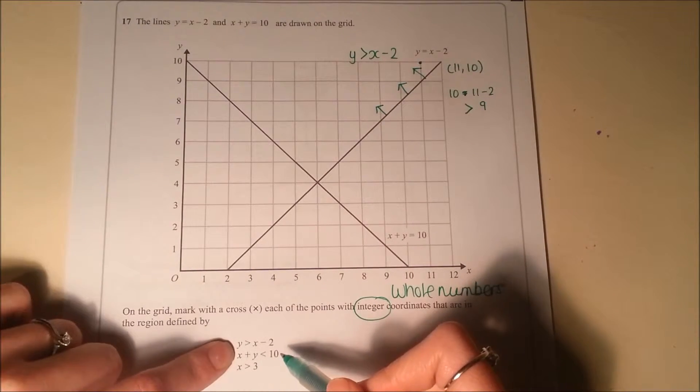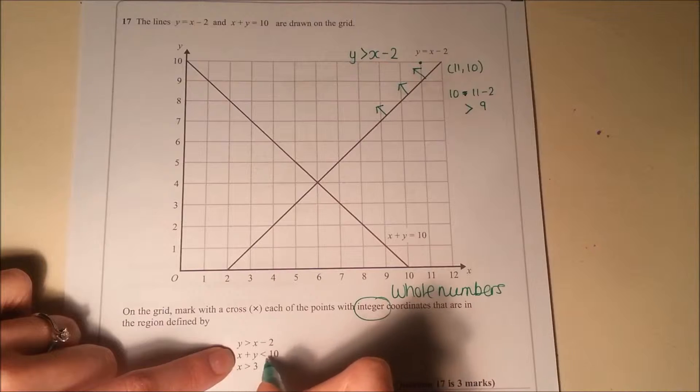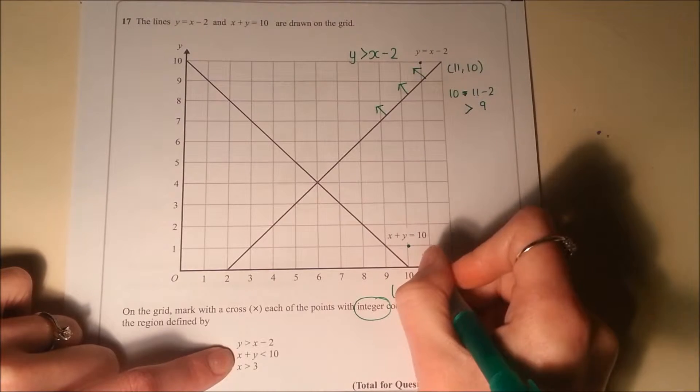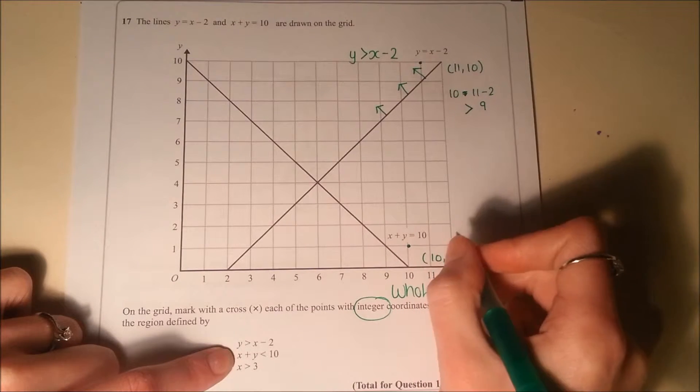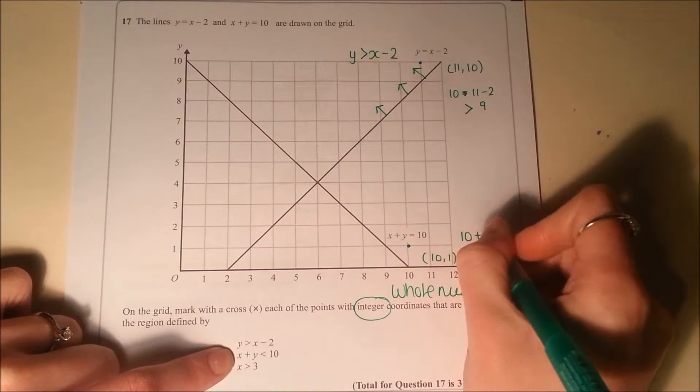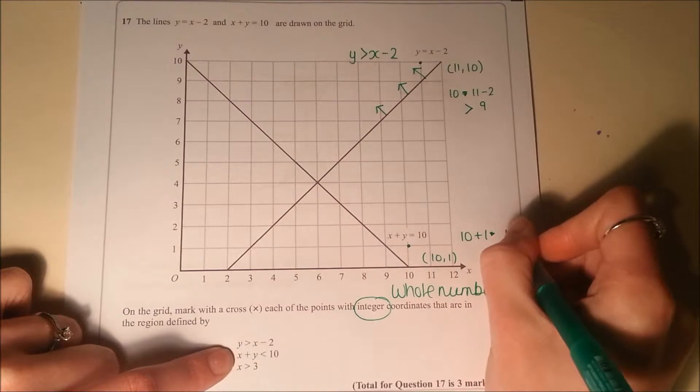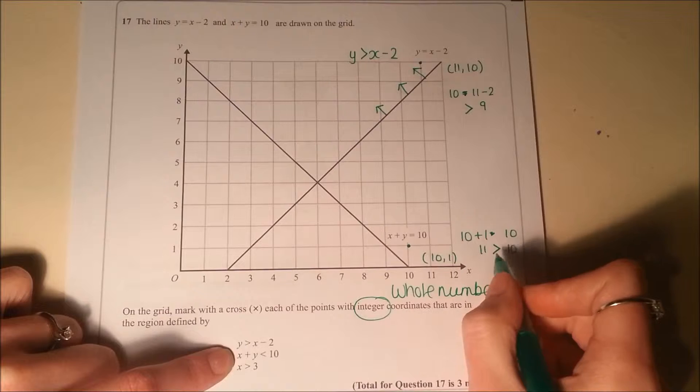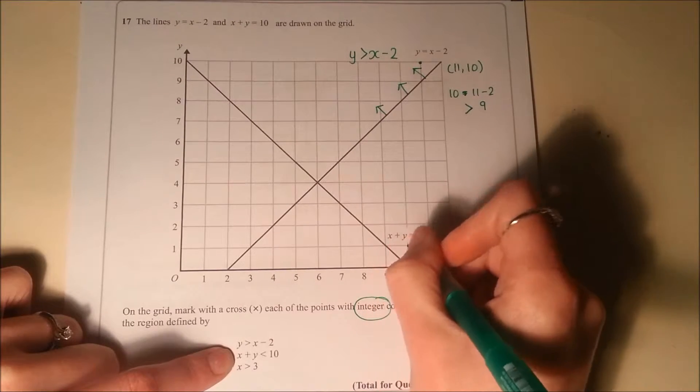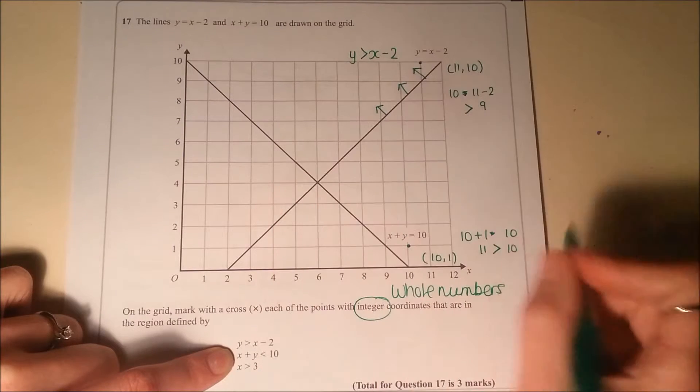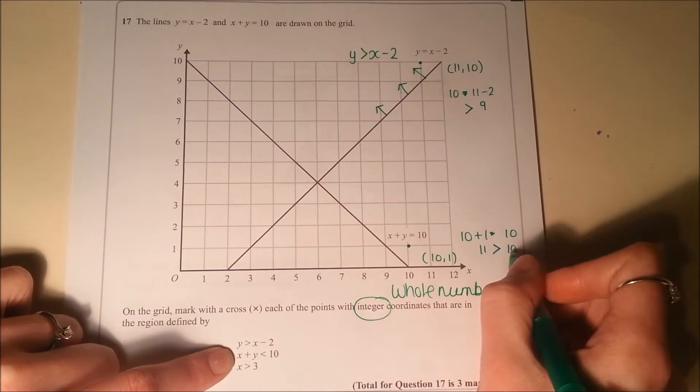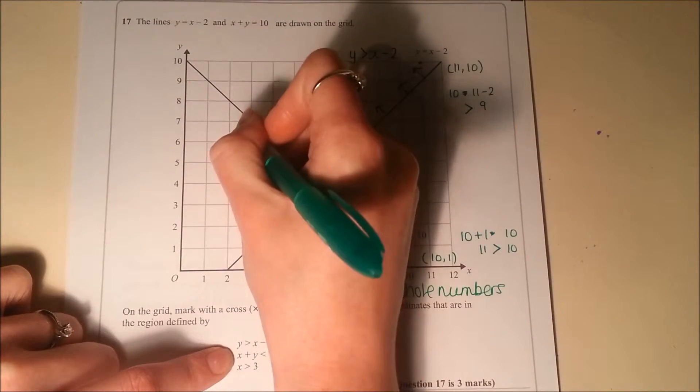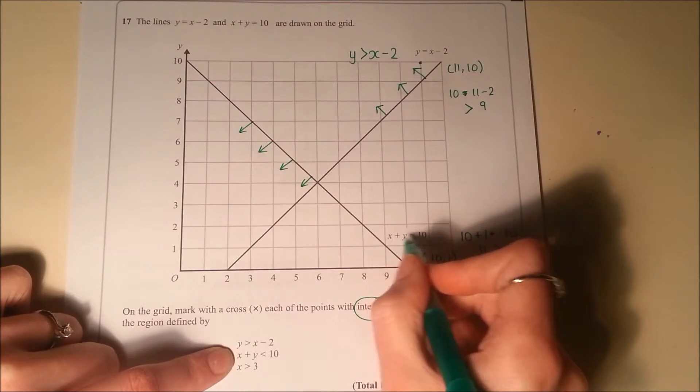Okay, let's look at the second inequality, same sort of idea. So x plus y is less than 10, so let's pick maybe that point there and test that. So for that one, that's 10, 1, so x is 10 plus 1, so that'll be 11. So the correct symbol I need to put in there is greater than. So this side of the line here is where x plus y is greater than 10. So the other side of the line, so all these points along here, is where x plus y is less than 10.